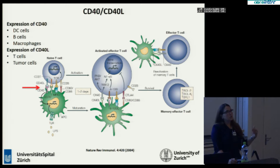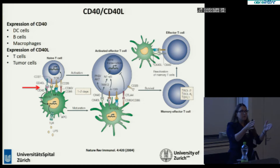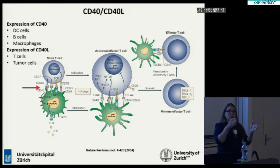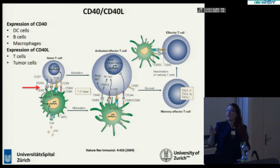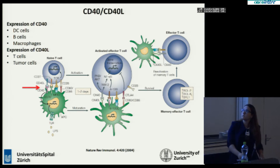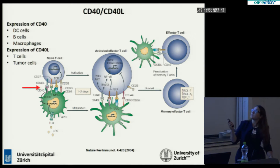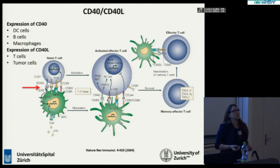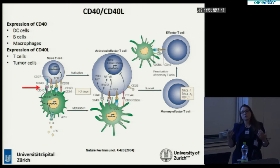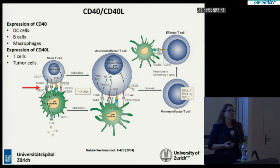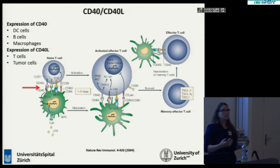The activation of this pathway is not only important in the first phase of T-cell activation, but also afterwards in the interaction between T cells and B cells. Let's see first what happens between T cells and dendritic cells. The expression of this molecule will lead to the activation of the T cells, but at the same time will also lead to the maturation of dendritic cells. The dendritic cells are going to be facilitated by the activation of the CD40-CD40 ligand pathway to do their function and sustain the presentation of the antigen.